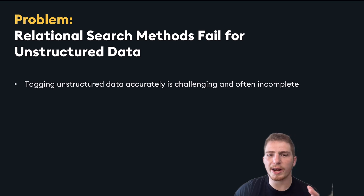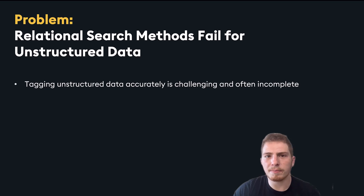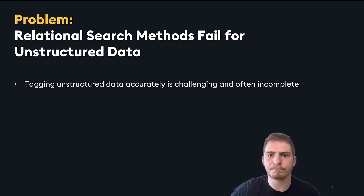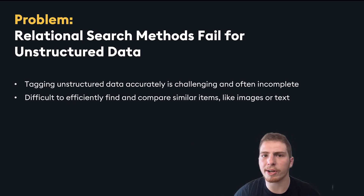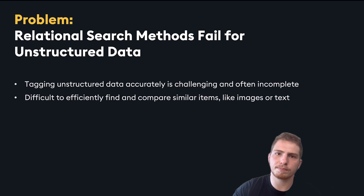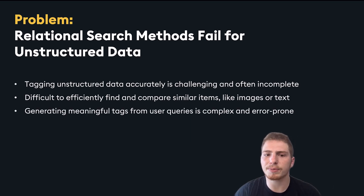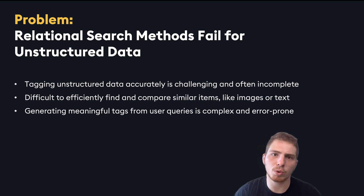The first is that tagging unstructured data accurately is challenging and often incomplete. If you're taking data and then parsing tags from it, those tags often won't accurately represent the full data. It's also difficult to efficiently find and compare similar items — for example, recommending articles similar to one a user is reading isn't straightforward with relational methods. Additionally, generating meaningful tags from user queries is complex and error-prone; you could completely miss the user's intent.